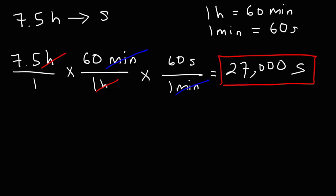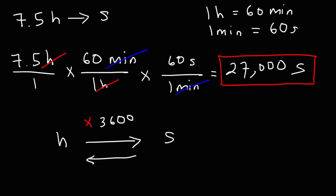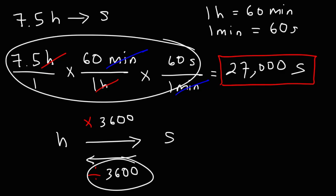For those of you who want to get to the answer quickly, here's a shortcut. To go from hours to seconds, you need to multiply by 3,600. And if you want to go from seconds back to hours, you need to divide by 3,600. We're going to go through two examples of converting seconds to hours. You can use the shortcut method or show your work — it's up to you.